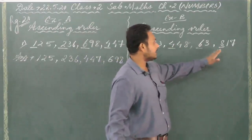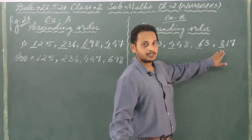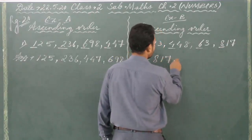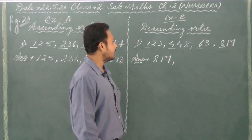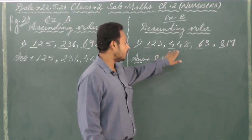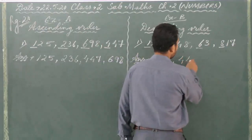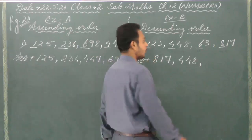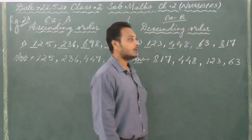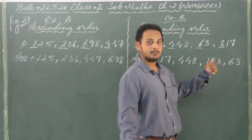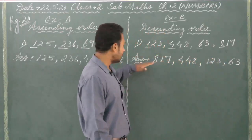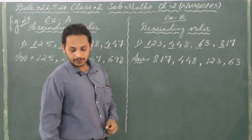Now the remaining 3 numbers: we have 1, 4, and 8 in the hundreds place. Which is the greatest? It is 8, so 817 is the biggest. After that we have 1 and 4 — out of these two, 4 is bigger, so 448 comes next, then 123. And as I told you, 63 will come right at the last because it has only 2 digits, so automatically it becomes the smallest number. I have done the first number with you — numbers 2, 3, and 4 are your homework to do yourself.